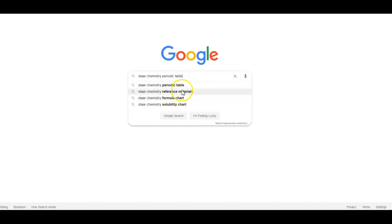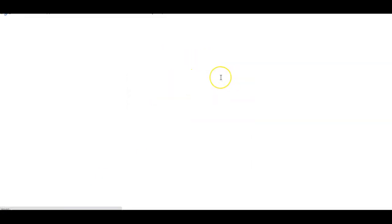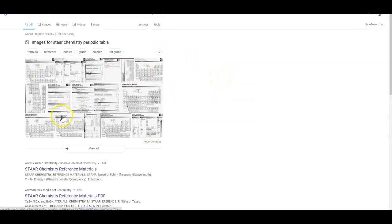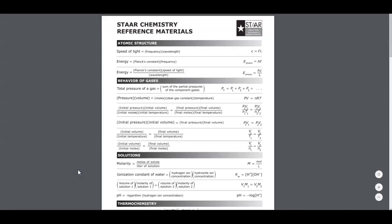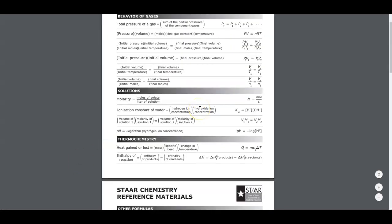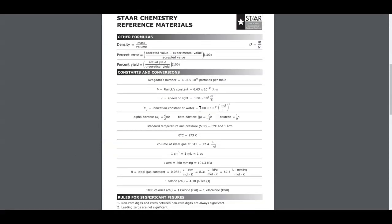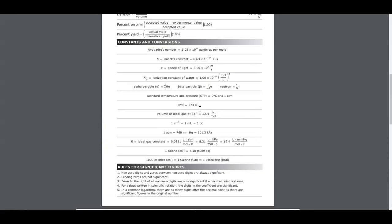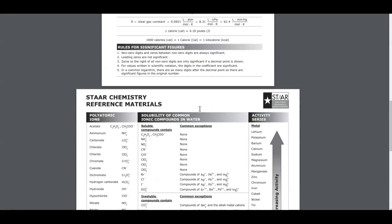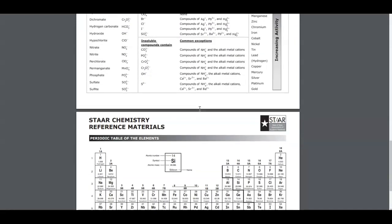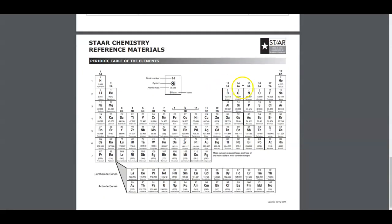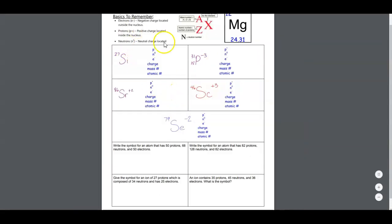Then we moved on to the nuclide symbol lecture, which is this paper right here. You also need a periodic table — you can get one by doing a Google search for 'star chemistry periodic table.' Reference materials is also fine. Just about any of these will work — this one right here is good, and that's all the reference materials. It's good to print out and have, because these are what you're allowed to use on every single test. So here is the periodic table that we can use during this activity.